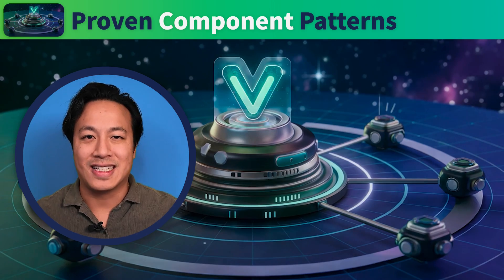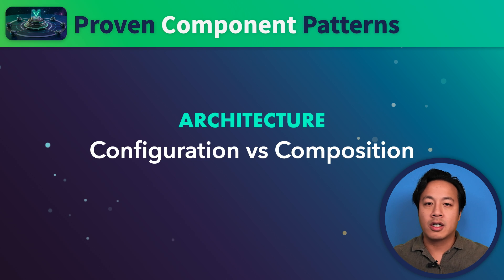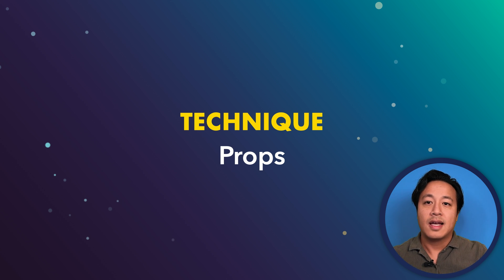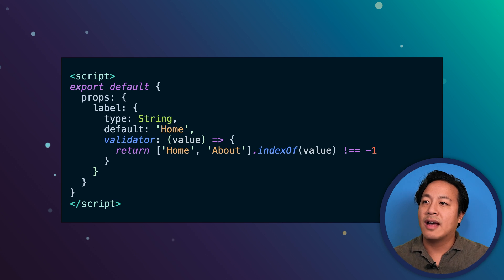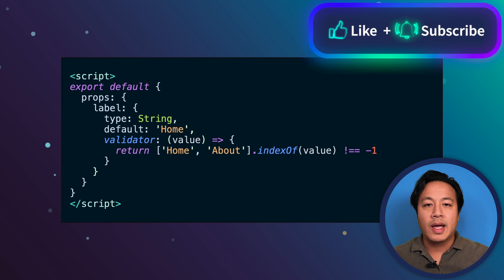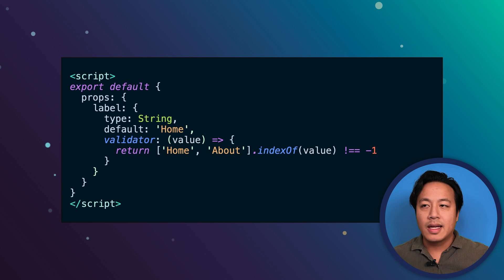With that said, let's jump right in. The first pattern we want to talk about is really an architectural pattern — this idea around configuration versus composition. The very first technique that most people come across when learning Vue and designing their components is the concept of props. We're not going to go over what props are; we assume you already know that. Here we have a standard prop defined according to best practices: a label prop with a type of string, a default value of home — which means you no longer need the required property — and a validator to check whether the prop is valid.